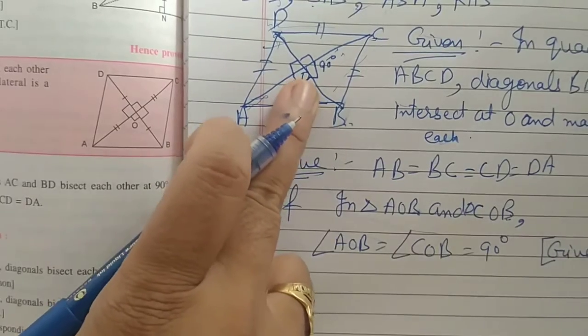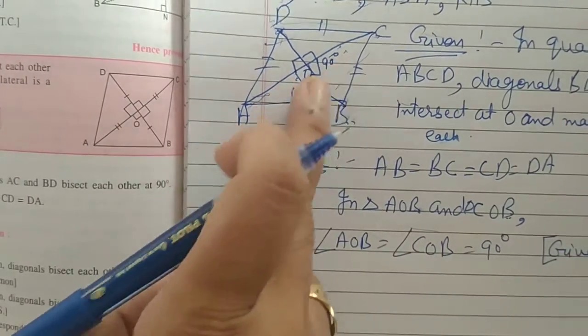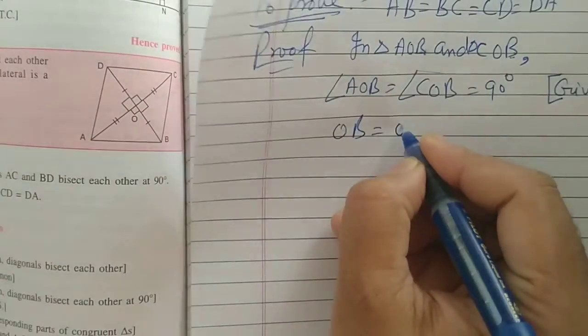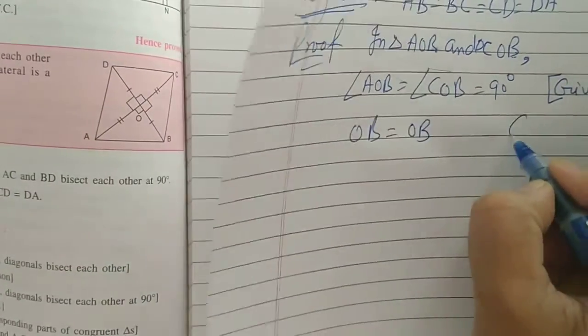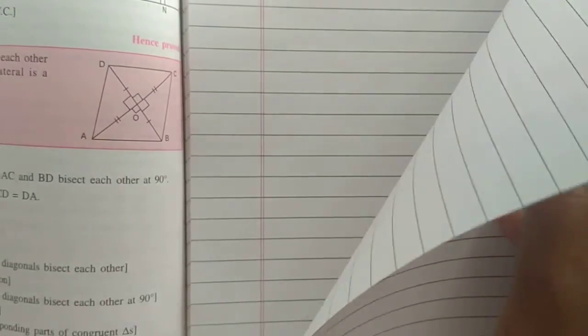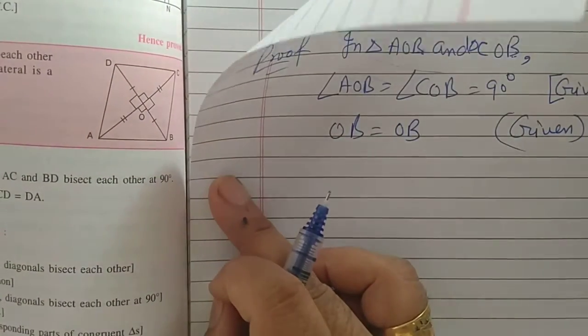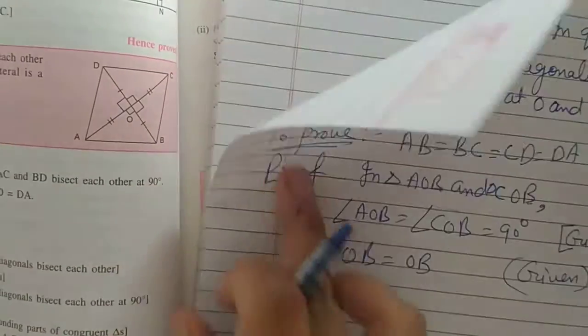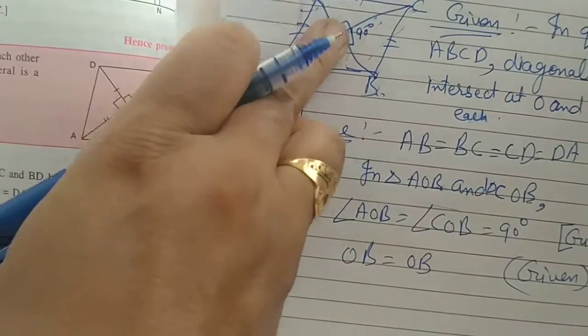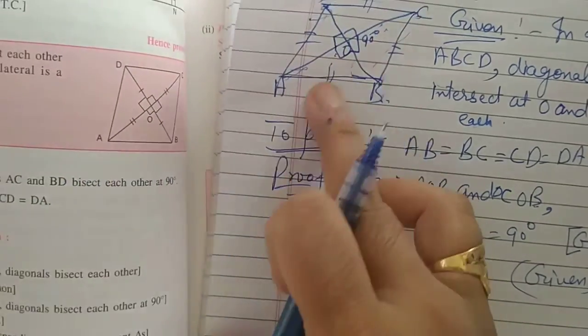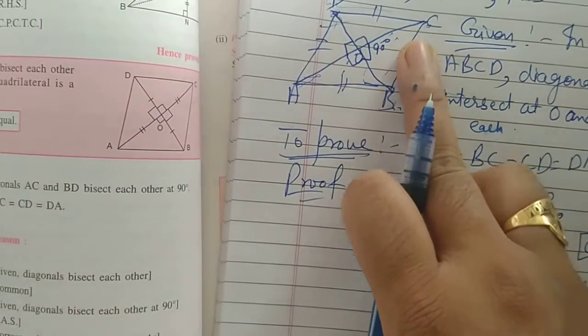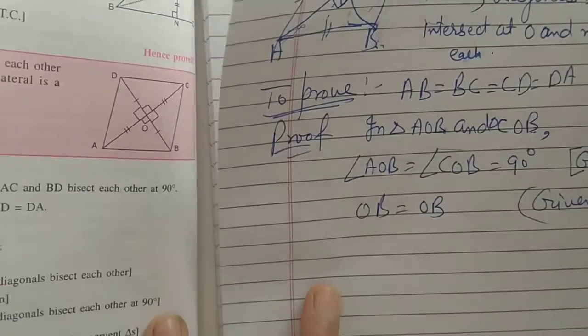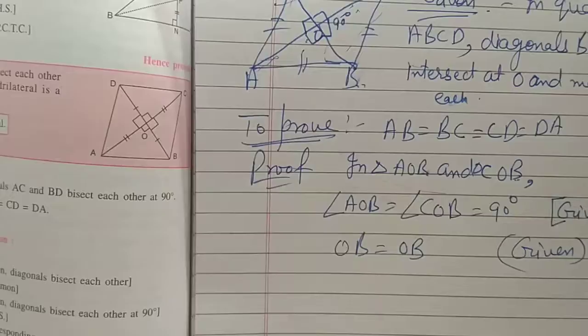Then next one is here. In these two triangles, OB, OB is common. In both triangles OB is common. Then you will write OB is equal to OB. This is also given. Then next one is OA and OC. So, here OA will equal to OC. Because diagonal bisects. In the question it is given, it is bisect. Bisect means divided into two parts.